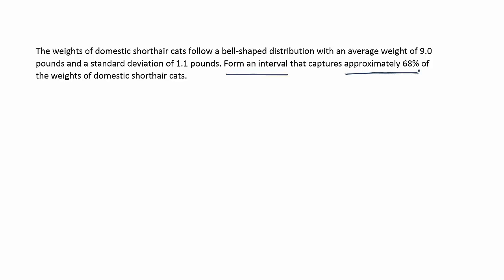They always use that language: approximately blank percent of the data falls within a given interval. They want us to form an interval. So we definitely want to make the connection that they're asking us to find an interval that captures approximately 68% of the data. And remember that the empirical rule requires one assumption — that the data follows a bell-shaped distribution. And luckily, we find that stated up here, that it follows a bell-shaped distribution.